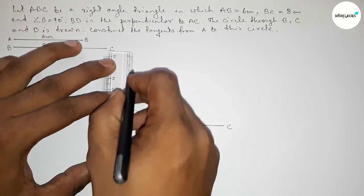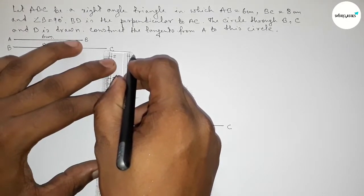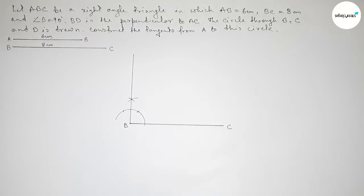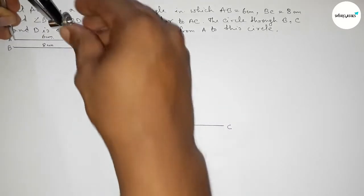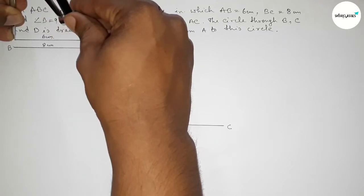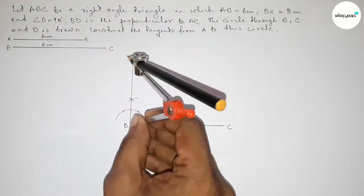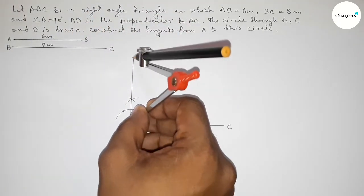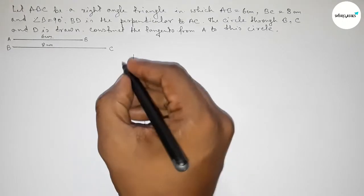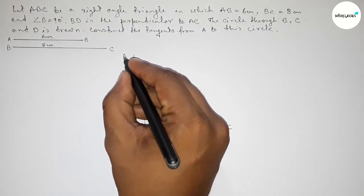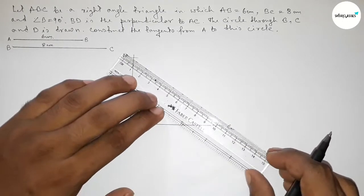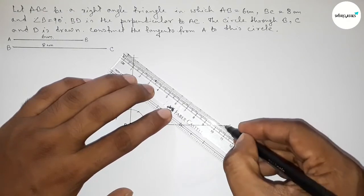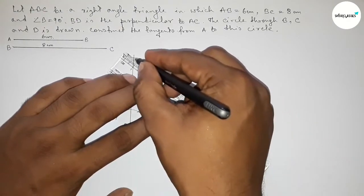Joining this to get a 90 degree angle. Now taking the length 6 centimeter by using compass, putting the compass here and cutting here. Taking point A here, and now joining A and C.